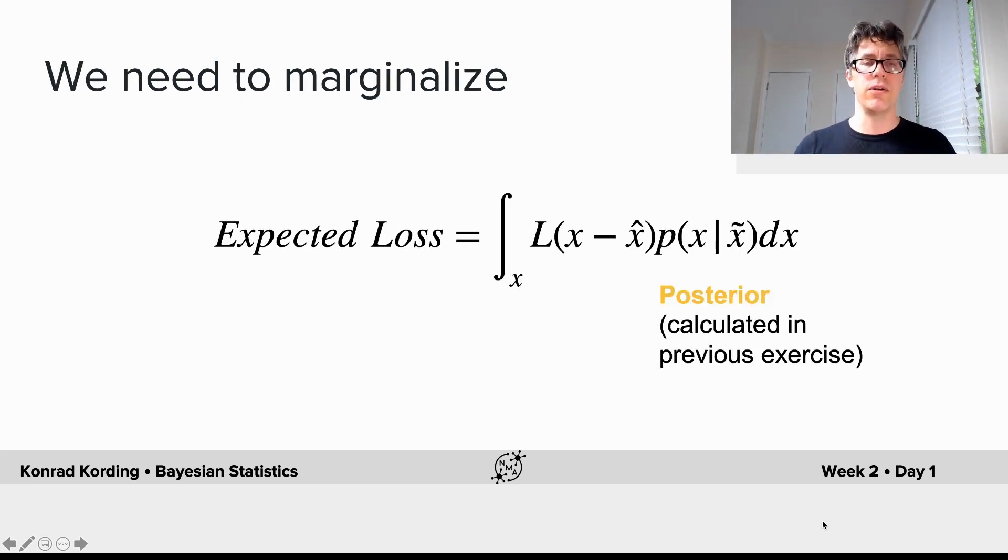How may the loss look like? As before, we now have a marginalization problem. We want to calculate the expected loss but we don't know what the right x is. We have to consider each possible x, proportional to its probability. We have the posterior—the probability of x given tilde x—which is the posterior we believe subjects calculate.